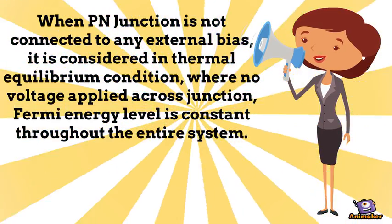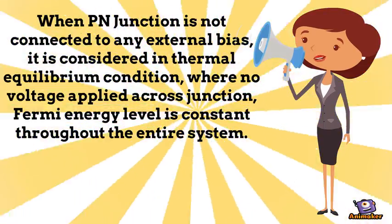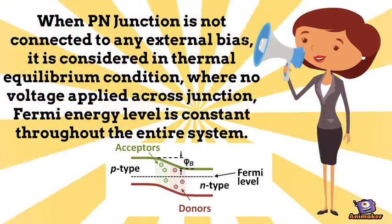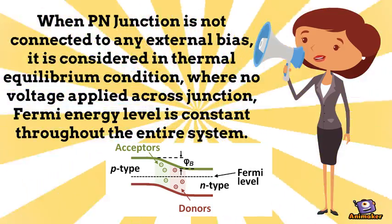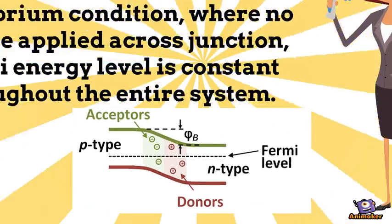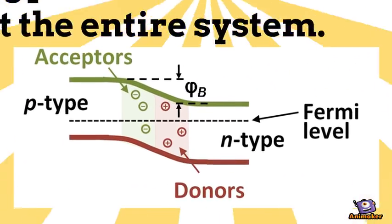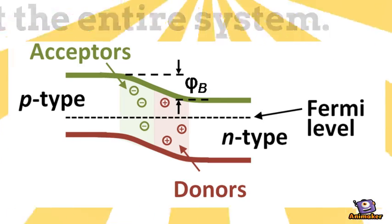When P-N junction is not connected to any external bias, it is considered in thermal equilibrium condition, where no voltage is applied across the junction. The Fermi energy level is constant throughout the entire system.